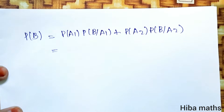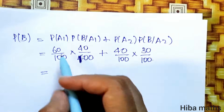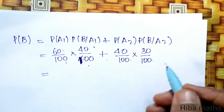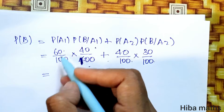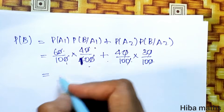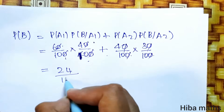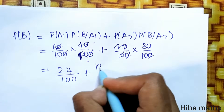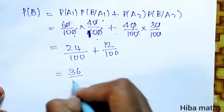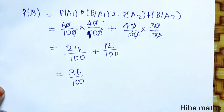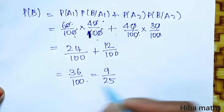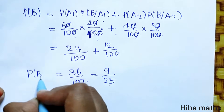Substituting values: 60 by 100 into 40 by 100, plus 40 by 100 into 30 by 100. So 6 fours are 24, 10 into 10 is 100, plus 4 threes are 12, divided by 100. So the answer is 36 by 100, which simplifies to 9 by 25. That gives us P of B.